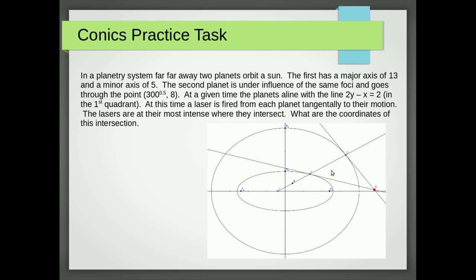They're in the first quadrant, because note that we might get two points over here instead, so they're in the first quadrant, so we want the positive values. At this time, a laser is fired from each planet tangentially to its motion, so we've got a laser that goes like this and one that goes like this. The lasers are at their most intense where they intersect.